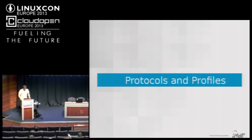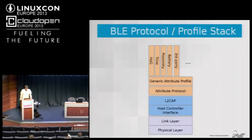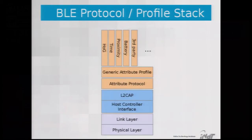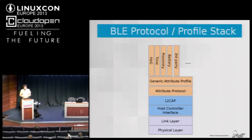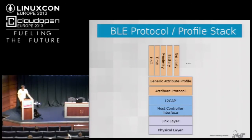The protocol stack for Bluetooth Low Energy has the radio hardware at the bottom, which provides a Host Controller Interface to the host. L2CAP is the transport protocol — think of it as the TCP of Bluetooth — shared with classical Bluetooth. Above that, the orange section contains protocols and profiles specific to Bluetooth Low Energy: the Attribute Protocol, the Generic Attribute Profile on top of it, and then specific use-case profiles on top of GATT.